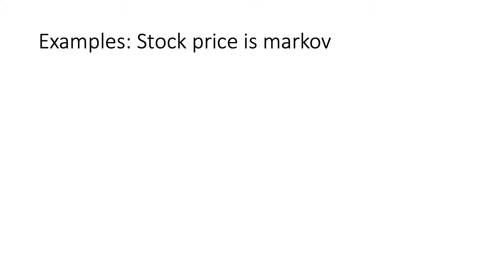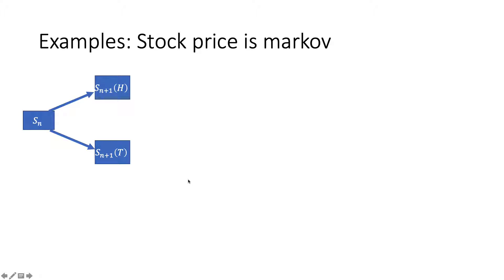Let's look at the stock price process and show that it is Markov. In the binomial asset pricing model, at time n we flip the coin: going up we move to uSN, which is SN+1 head, and on tail we move to the down value. What I'm interested in knowing, as I stand at time n, is my best guess of a function of the stock price tomorrow.